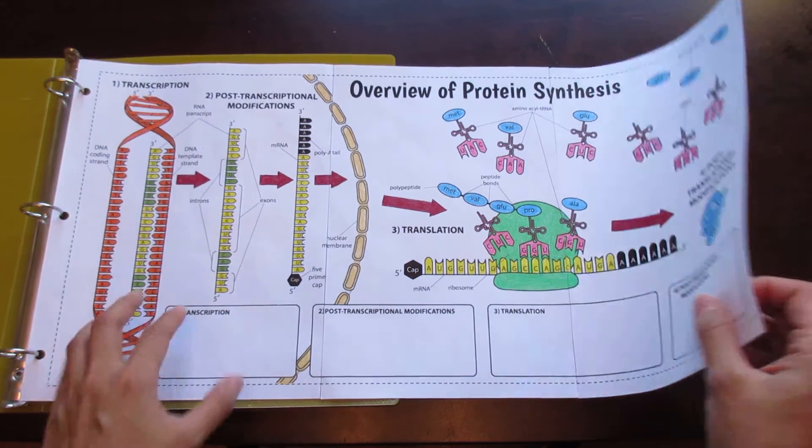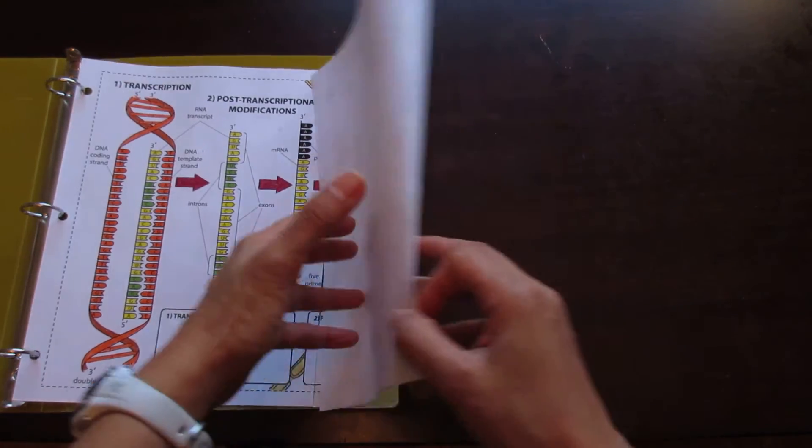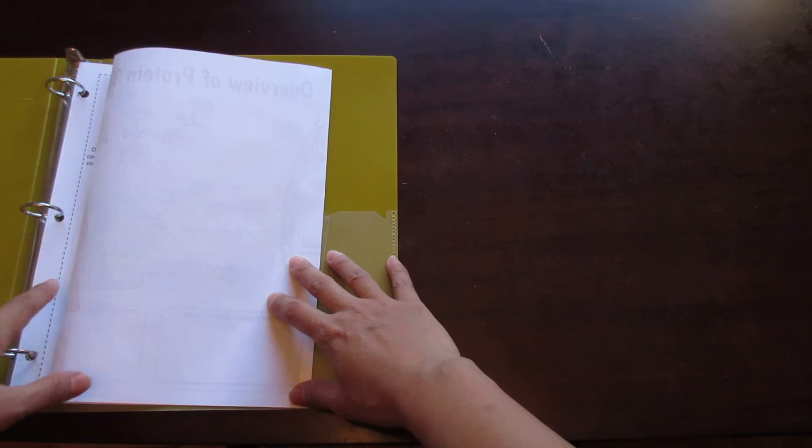That's three pages that when cut along the seams and taped together, fold neatly into a binder without impeding the binder rings.